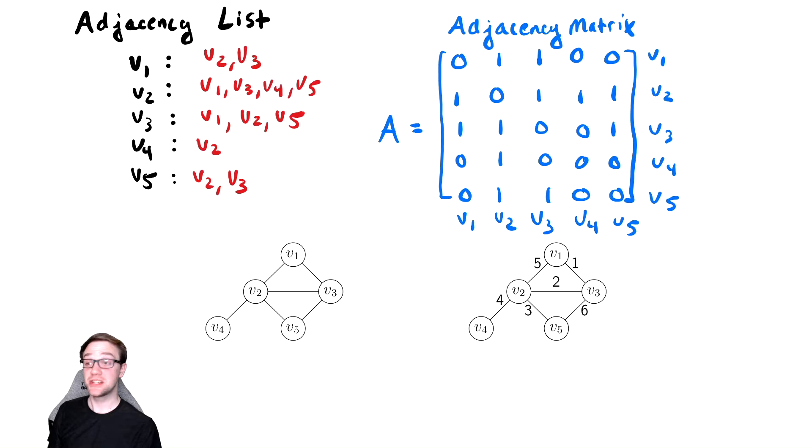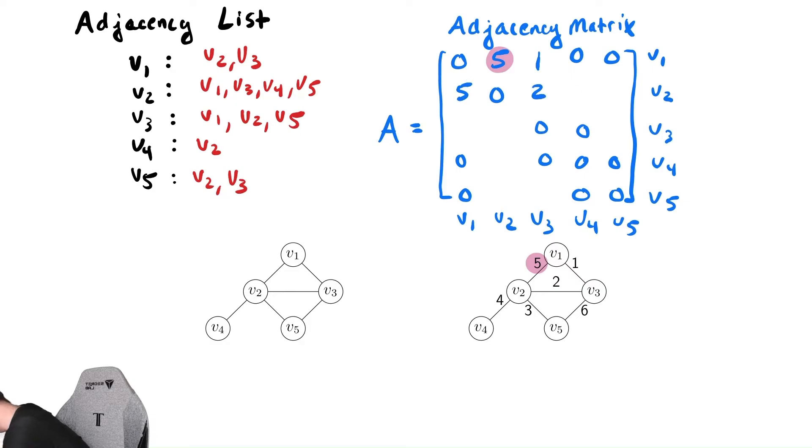The only thing we change is instead of writing a one, we write a number for that weight. So when V1, V2 has weight five, we see that V5 has that. So this entry should be five. So we put a five there. And just so we can see where it's coming from, we're going to highlight that. Let's update the rest of the entries. Now that they have magically been updated, we can see the matrix is still symmetric. And it looks like we can easily access those weights. So the adjacency matrix actually works very well with weighted graphs.